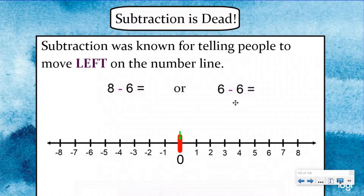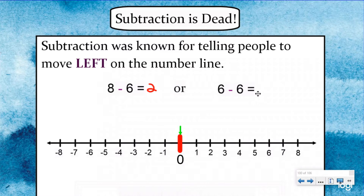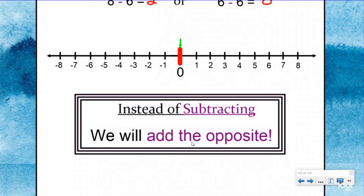We interrupt your regularly scheduled program to announce in breaking news: subtraction has just died due to natural causes. Subtraction was best known for helping us move left on the number line to find the difference. For example, we could start at eight and subtract six, moving six units to the left to find the difference between eight and six was two. We could also start at six, subtract six, and find the difference between six and six was zero. This time, however, he moved a little too far left and fell off a cliff, which we consider to be natural causes. Subtraction is survived by his son: Add the Opposite. To honor his legacy, anytime we see a subtraction sign we'll follow the rule of rewriting to add the opposite.